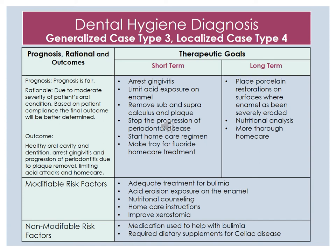Some therapeutic goals in the short term include arresting the gingivitis, limiting acid exposure on the enamel, removing subgingival and supragingival calculus and plaque, stopping the progression of periodontal disease, starting a home care regimen, and making a tray for fluoride home care treatment. In the long term, we would like to possibly place porcelain restorations on surfaces where enamel has been severely eroded, complete a nutritional analysis, and provide more thorough home care.